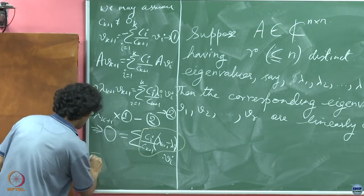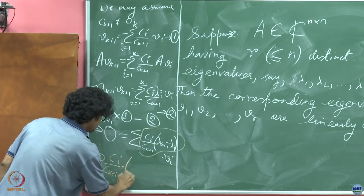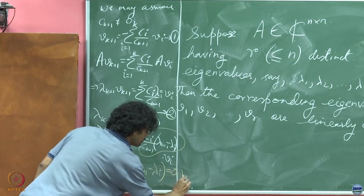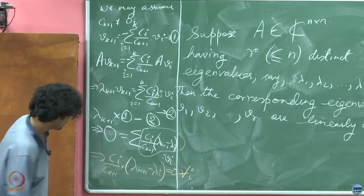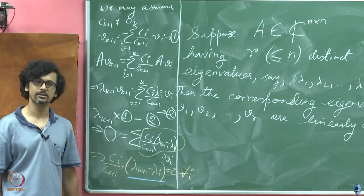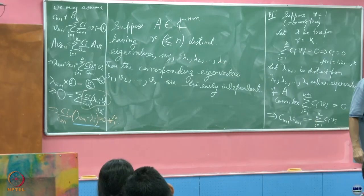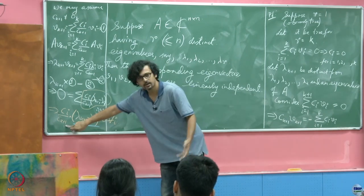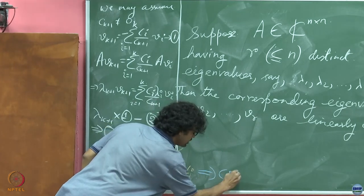That means we must have ci by ck+1 and lambda k+1 minus lambda i equals 0 for all i. But can this term vanish, lambda k+1 minus lambda i? By your very assumption, these are all distinct eigenvalues. So lambda k+1 is different from any of the aforesaid lambdas. So I can just get rid of this term. The only conclusion is that ci equals 0.